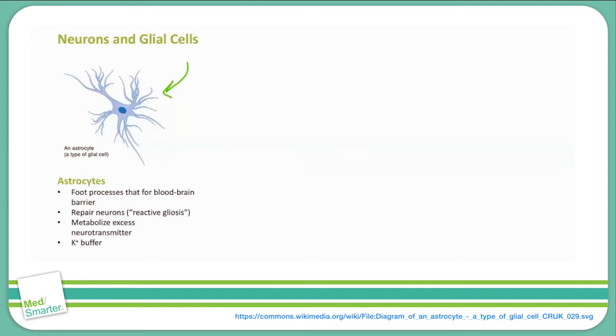An additional function of astrocytes is in the repair of the central nervous system. When neurons are damaged, for example, in a stroke, astrocytes step in and form the equivalent of a scar in the brain. This is a phenomenon known as reactive gliosis, which forms what is known as a glial scar.